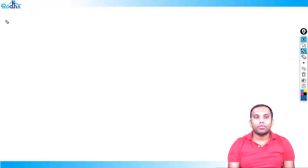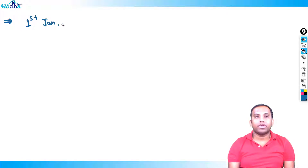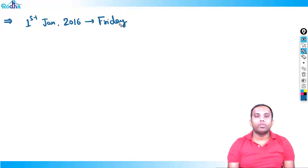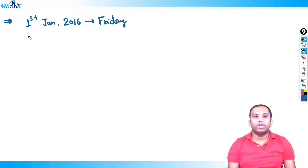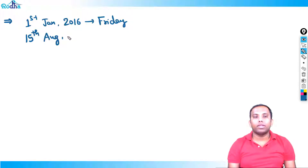Let's calculate one random date. Suppose 1st January 2016 was a Friday. Which day was 15th August 2017?